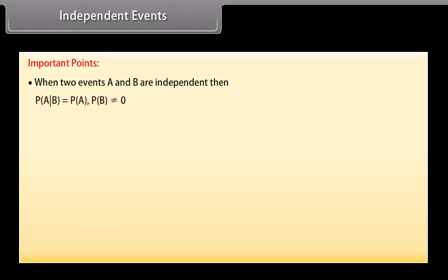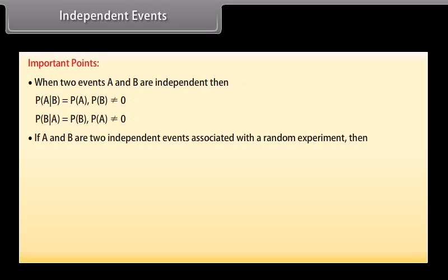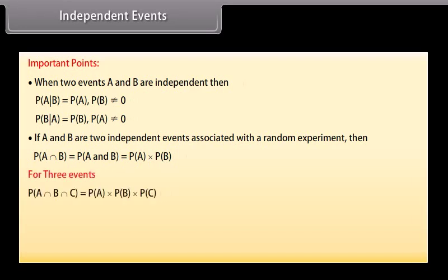Important Points: When two events A and B are independent, P(A|B) = P(A) provided P(B) ≠ 0, and P(B|A) = P(B) provided P(A) ≠ 0. If A and B are two independent events, then P(A ∩ B) = P(A) × P(B). For three independent events, P(A ∩ B ∩ C) = P(A) × P(B) × P(C).